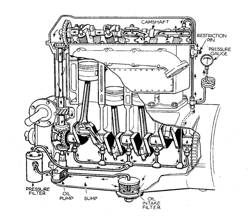The oil pump in an internal combustion engine circulates engine oil under pressure to the rotating bearings, the sliding pistons, and the camshaft of the engine. This lubricates the bearings, allows the use of higher capacity fluid bearings, and also assists in cooling the engine.